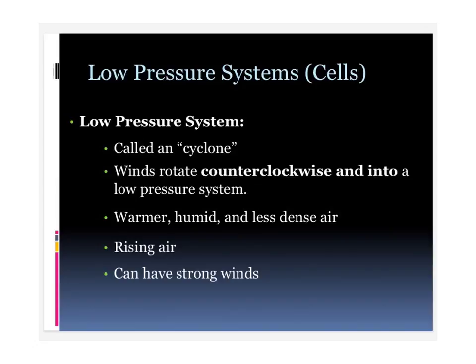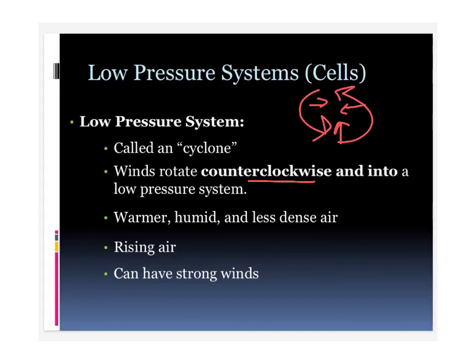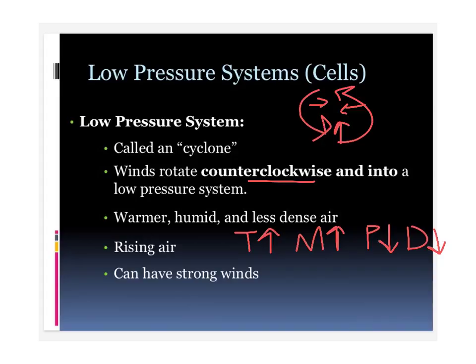Now we're going to talk about low pressure systems, which bring nasty weather. Low pressure systems or cells are called a cyclone. Remember, the high pressure cell is called an anticyclone. A cyclone is moving counterclockwise — opposite the way a clock goes — and it's going inward, because it has low pressure. Lower pressure and lower density is going to rise into that middle area. With warmer temps and more moisture, we have low pressure and low density. That rising air creates turbulence and makes our atmosphere really unstable, which is why we have bad weather and strong winds.